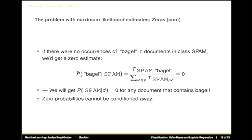Maximum likelihood estimation may not be reasonable for rare words. Say you have an email with the word 'bagel' in it. If 'bagel' never appeared in your training data, its probability would be zero — and zero times anything in the product is zero. So the overall spam probability would be zero no matter what other words appeared. A clever spammer could just put the word 'bagel' in every spam message and all of them would get through your filter.